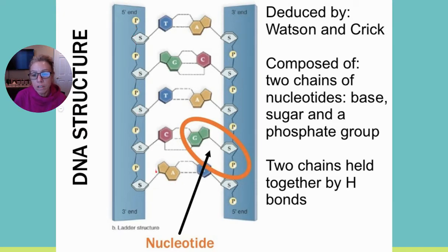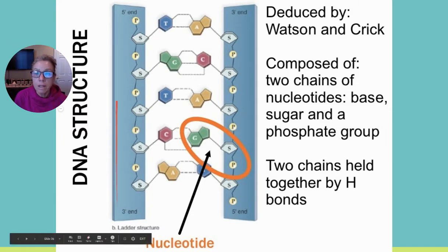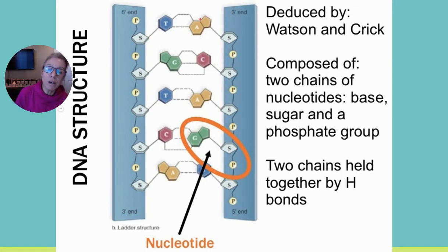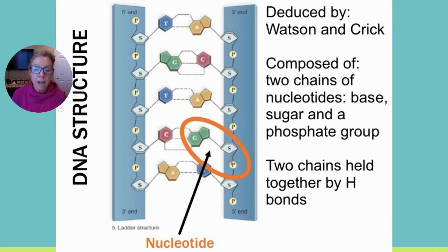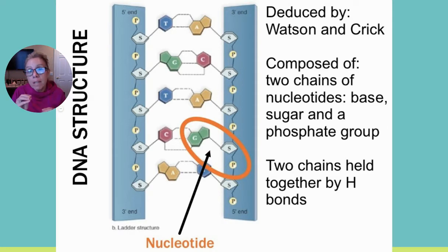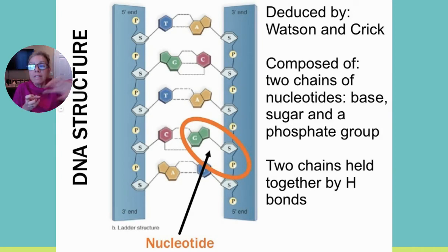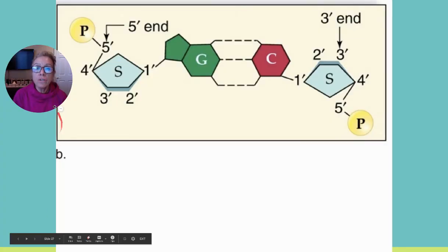Looking at the sugar numbering: carbon 1 binds the nitrogenous base, and the 5' carbon (the chimney) connects to the phosphate group. At the far end, reading carbons 1–2–3, that end is called the 3' end. At the top where the phosphate attaches from the 5' carbon, that is the 5' end. Across the other strand it mirrors: one end is the 3' prime and the other is the 5' end — making the two strands anti-parallel.